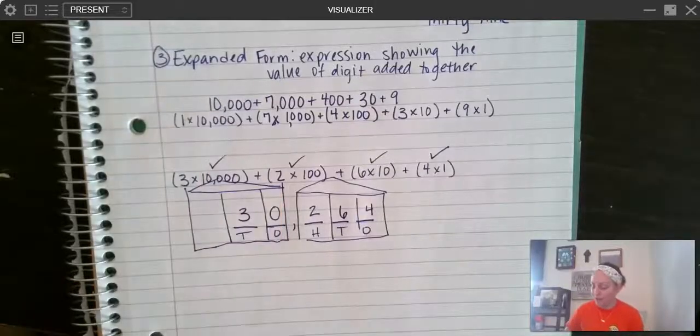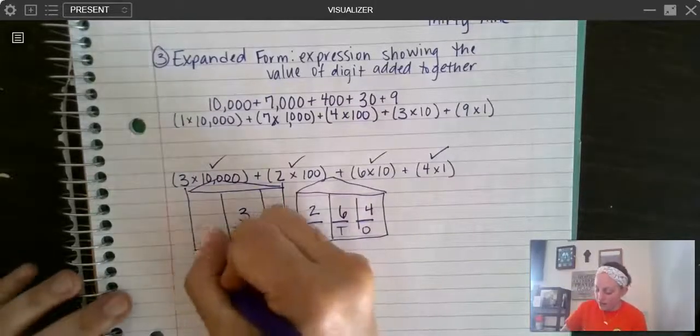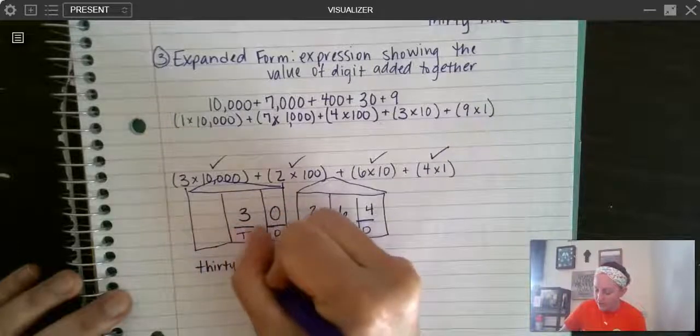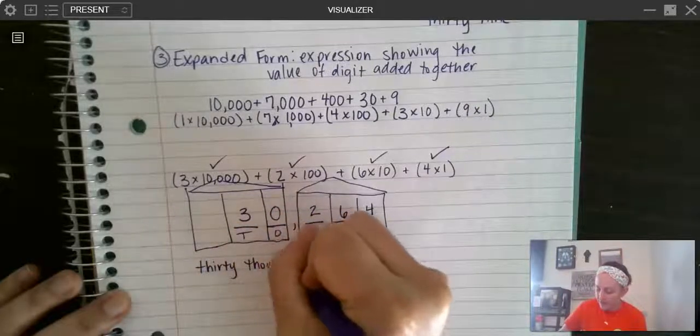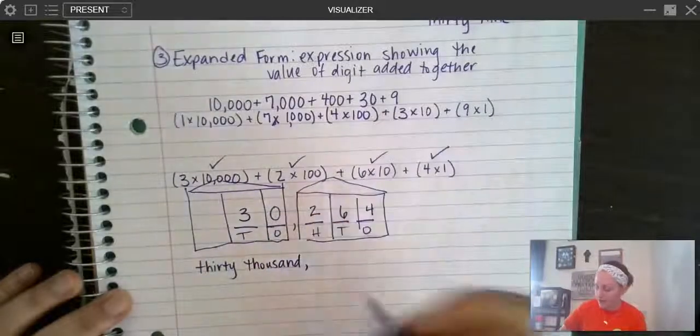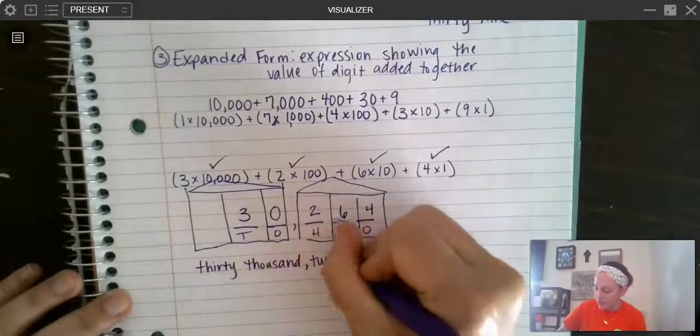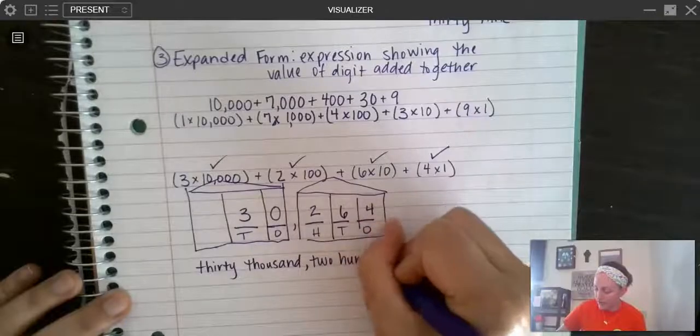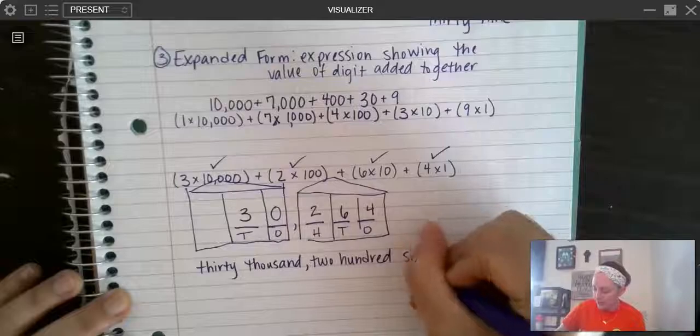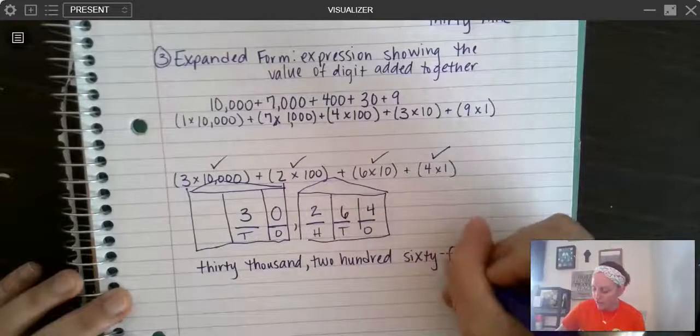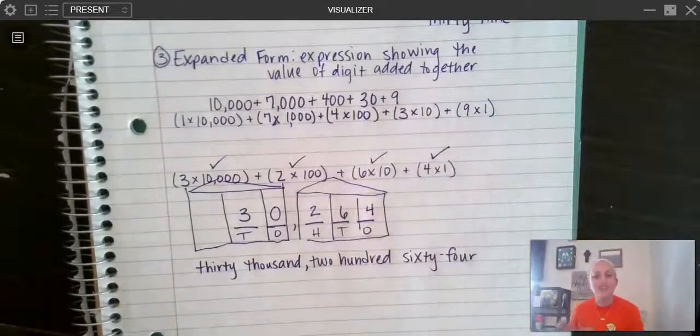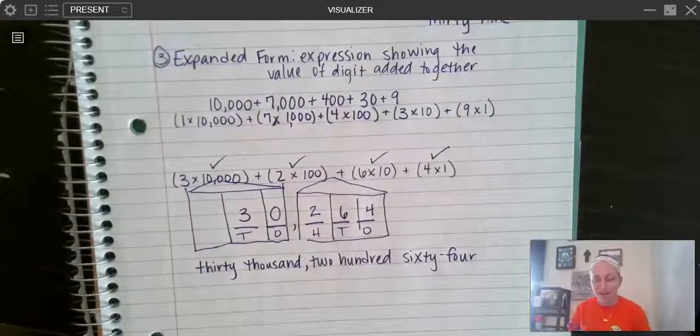And if I need to write this in word form now, I can write 30,000. And then remember I put my comma there. 264. Notice I didn't say 'and'. 264.